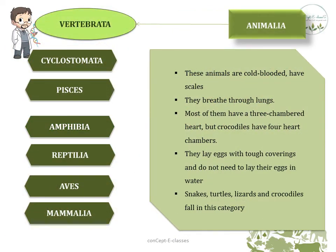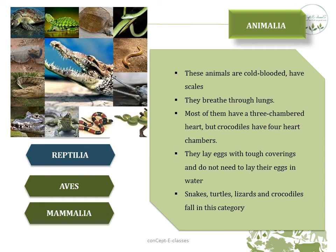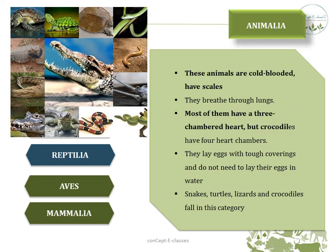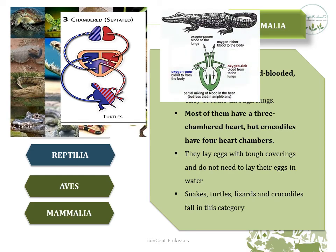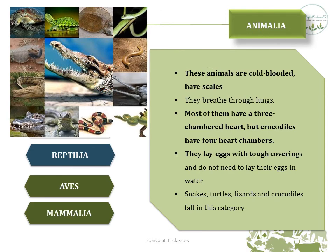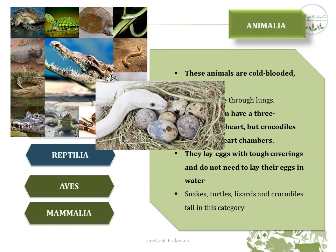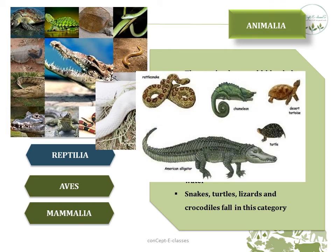The next class under Vertebrata is Reptilia. These are cold-blooded animals with scales. They breathe through lungs. Most have a three-chambered heart, but crocodiles have four chambers. They lay eggs with tough coverings and do not need to lay eggs in water like amphibians. Examples are snakes, turtles, lizards, and crocodiles.